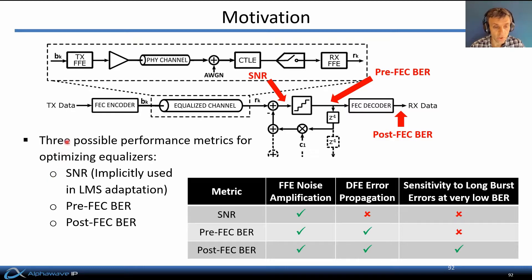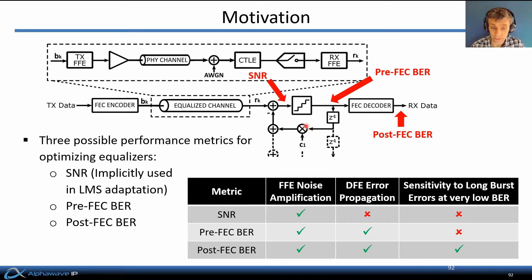It is therefore possible to co-optimize the transmitter and receiver circuits based on a number of different criteria. One of the most common choices is to optimize the equalization to maximize the signal-to-noise ratio just before symbol decisions are made — this is the criterion implicitly used whenever LMS adaptation is used in determining the tap weights of equalizers. Another possibility is to look at the pre-FEC bit error rate by comparing the output of the decision circuit to the actually transmitted sequence via a known training pattern. But really the best case would be to look at the post-FEC bit error rate, since that's what we really care about.